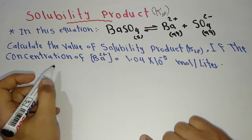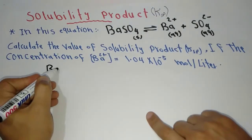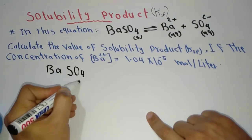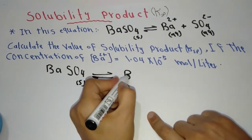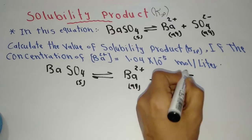Firstly, we have to write down the equation again: BaSO4 solid state, barium cation plus sulfate anion aqueous.